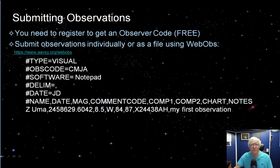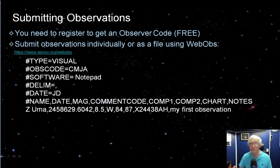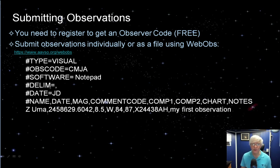Once you've recorded your observations, it's time to report them. If you report to the AAVSO, you'll need to get an observer code, which is free to anyone who requests one. You need to register at the site so they can contact you by email if there's a question about an observation. You don't need to pay anything — it's free. At the AAVSO website, you can submit your observations individually using a form, or if you have them in a spreadsheet, you can export to a comma-delimited file and upload that.